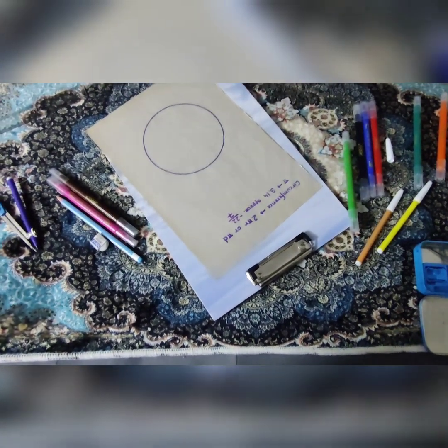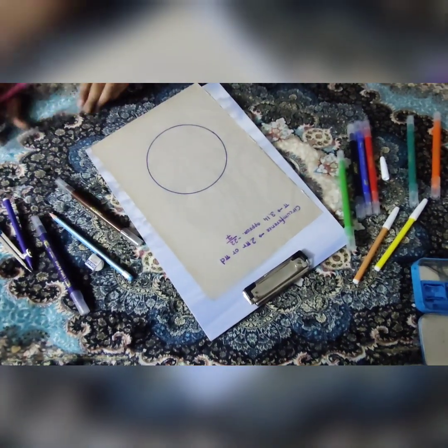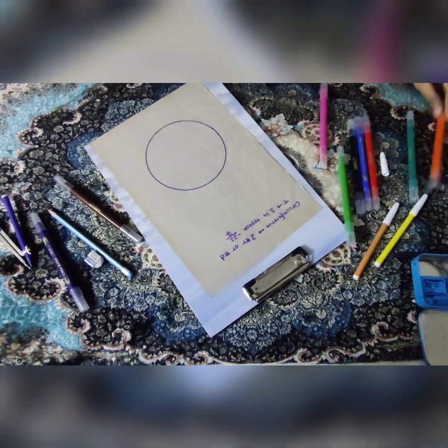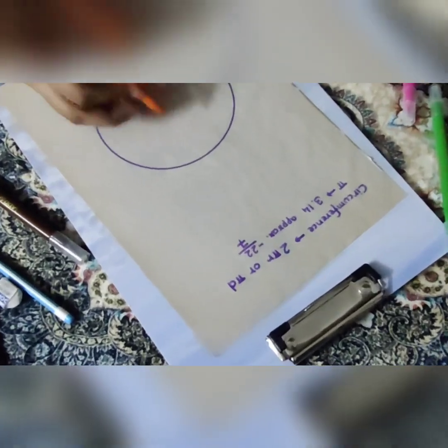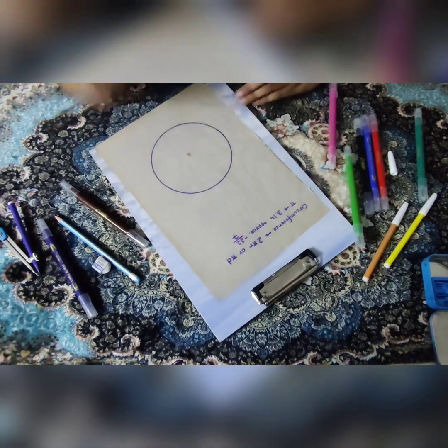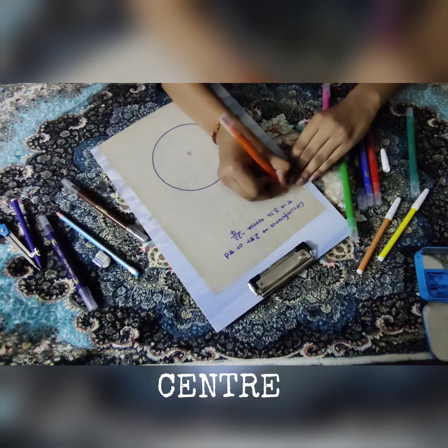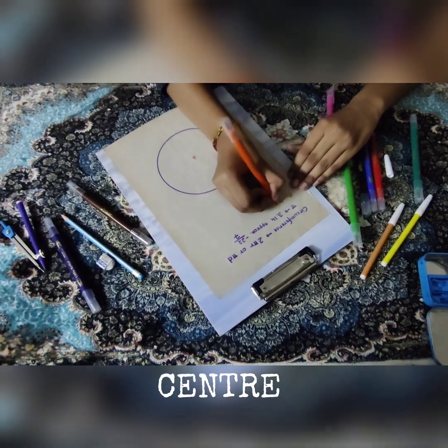Next we have the radius. No, first we will mention the center. So the place where we kept the tip of our compass is the center. So I have taken point A as my center and I want to mention it over here.